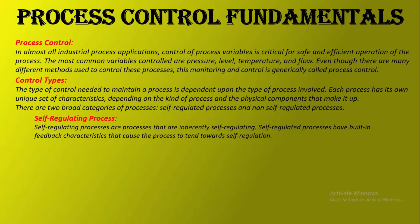An example of a self-regulating process is a tank of water with an input of water entering the tank and an output of water leaving the tank. The water level in the tank is constant at 10 inches. Water enters the tank at a rate of 20 gallons per minute and leaves the tank at a rate of 20 gallons per minute. As long as this balance is maintained, the water level will remain constant at 10 inches.